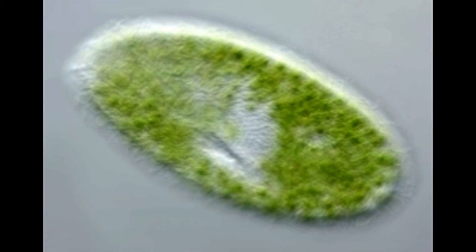Paramecium is its genus name, and there are several species of this protist, namely Aurelia, Bursaria, Caudatum, Trichium, etc.